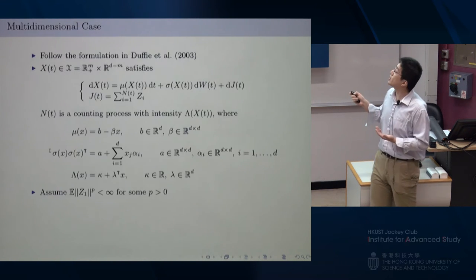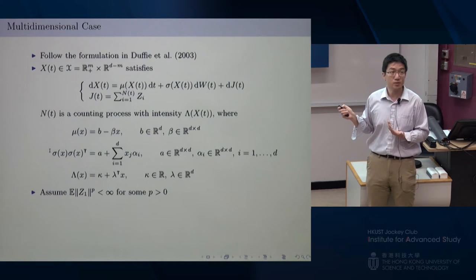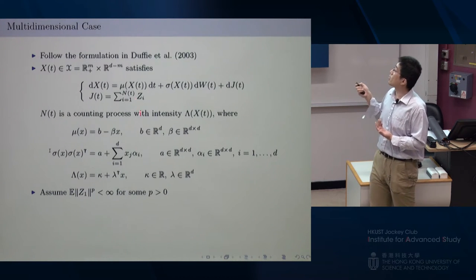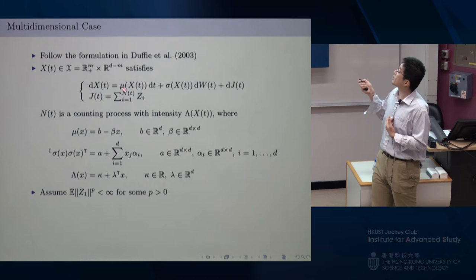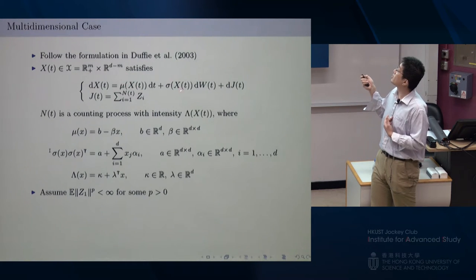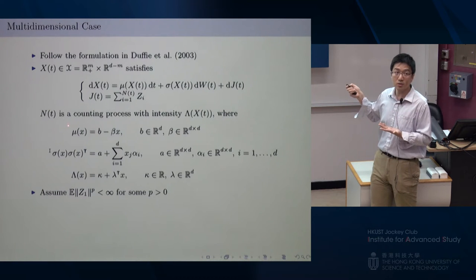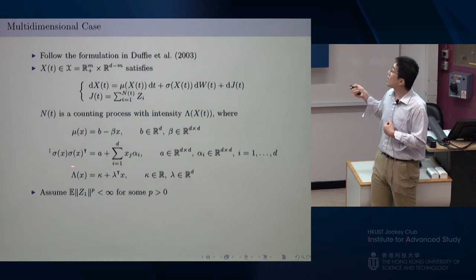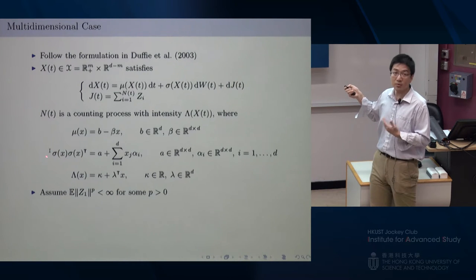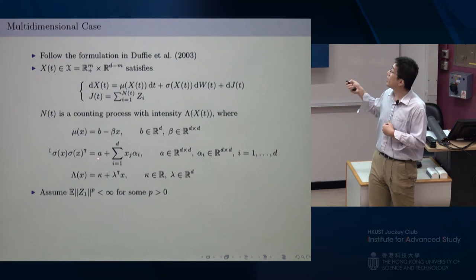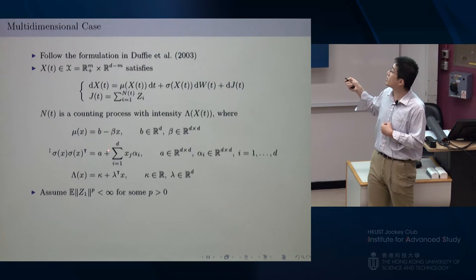Now I generalize to the multidimensional case. Here is the general representation of an affine jump diffusion in high dimension. You have an SDE where the drift function mu is affine — linear in the state variable x — the variance matrix sigma times sigma transpose is also linear in x, and the jump intensity is also linear in x. The assumption on the jump size is that it has a p-th moment for some positive p, so we don't even require the jump size to have a finite mean — very heavy-tailed distributions still work.